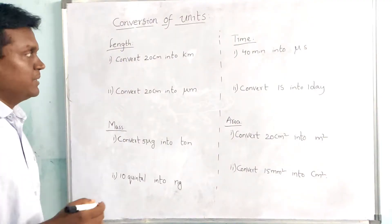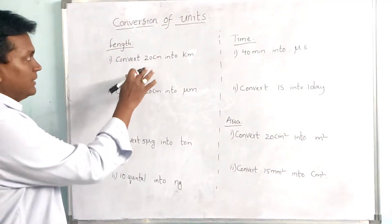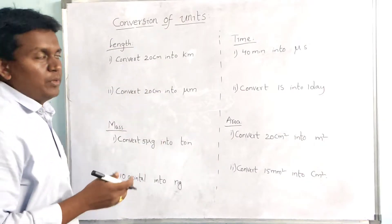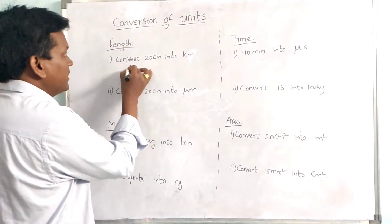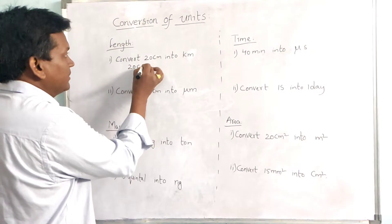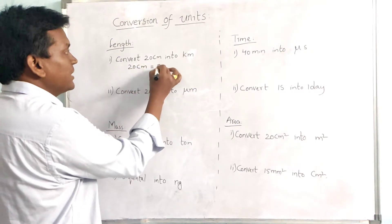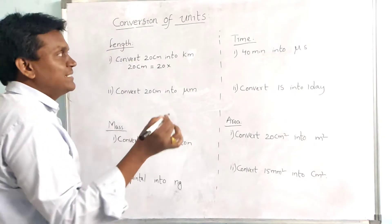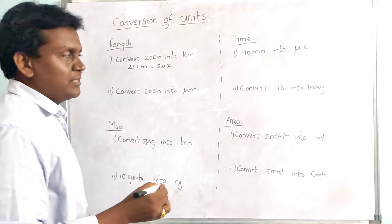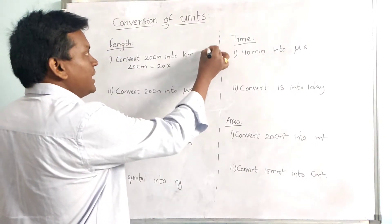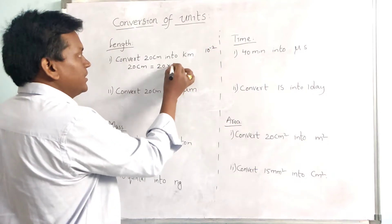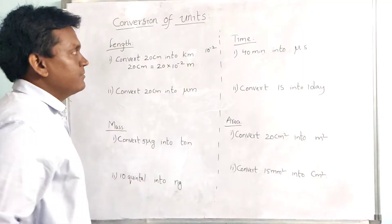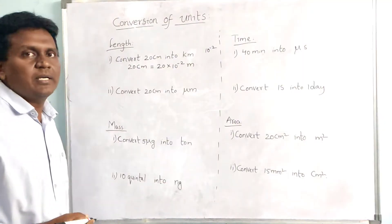As discussed previously, the centimeters should be converted into meters first. We have to convert 20 centimeters into meters. So 20 centimeters can be written as 20 × 10⁻² meter. Yes, we have converted centimeters into meters.